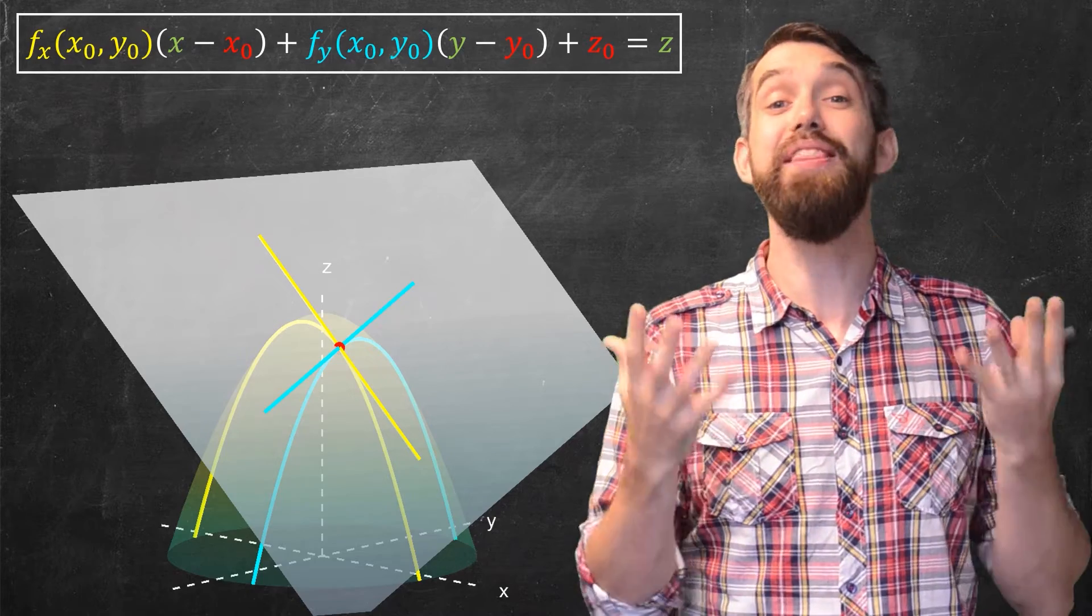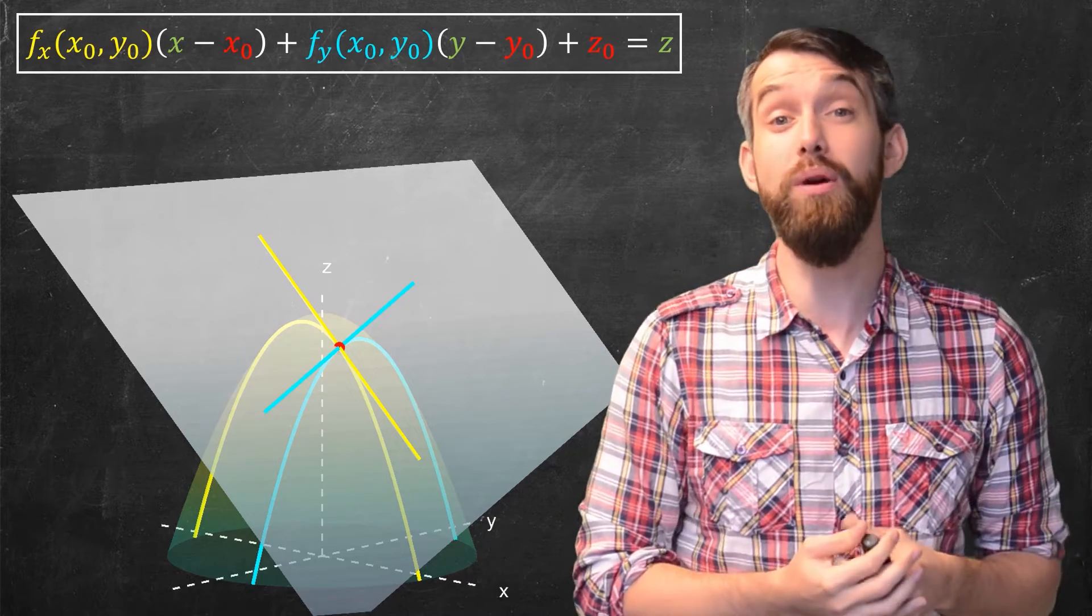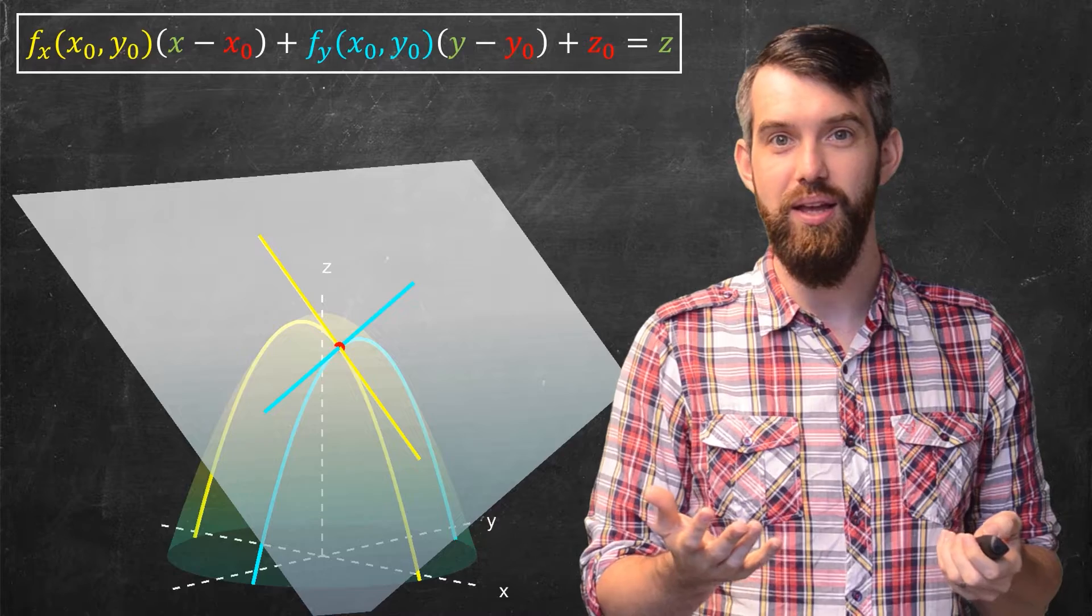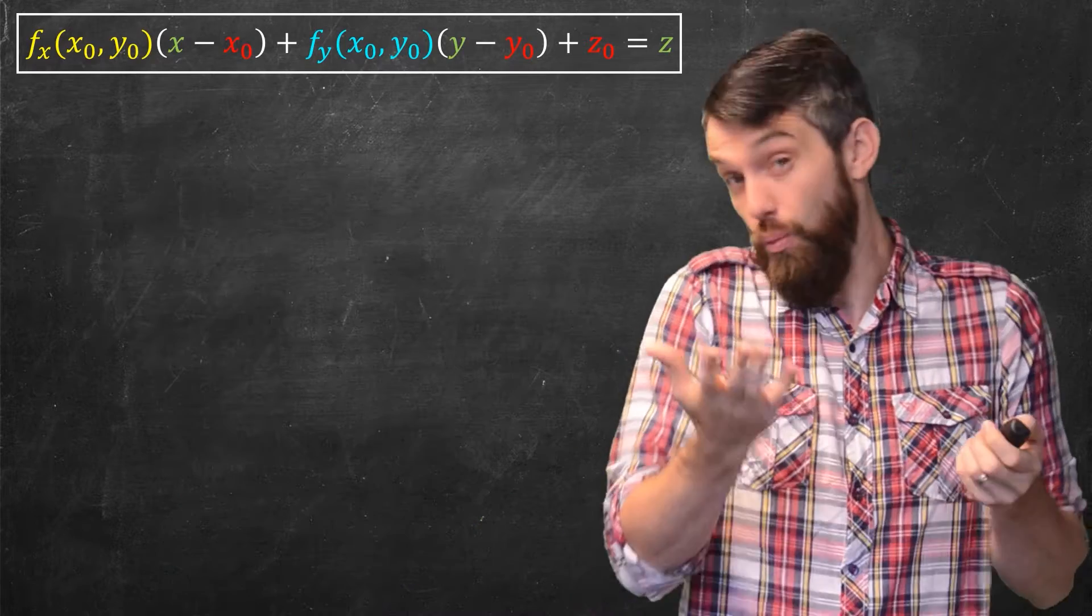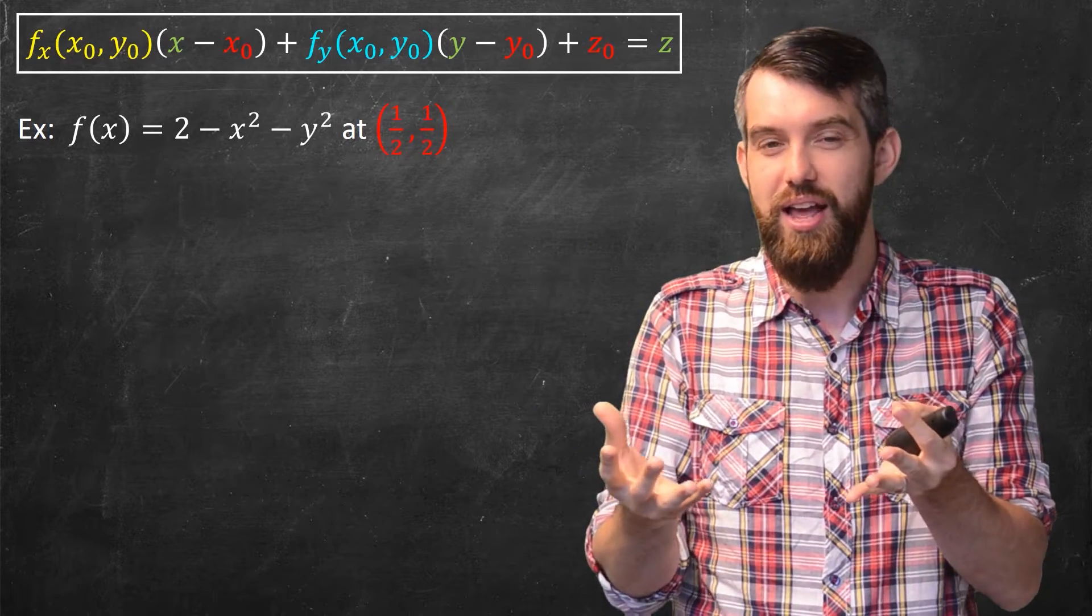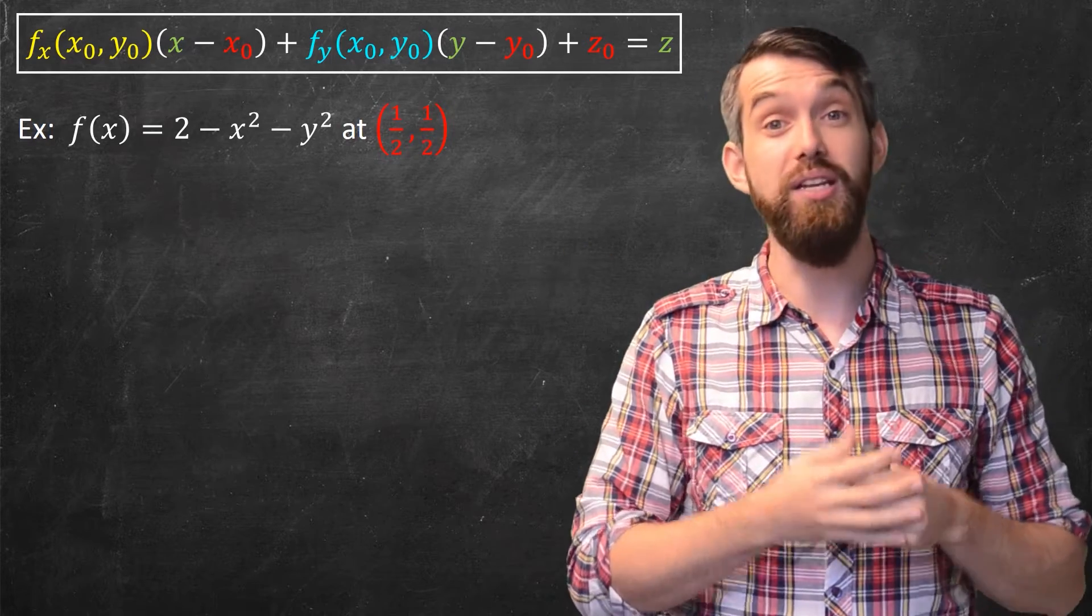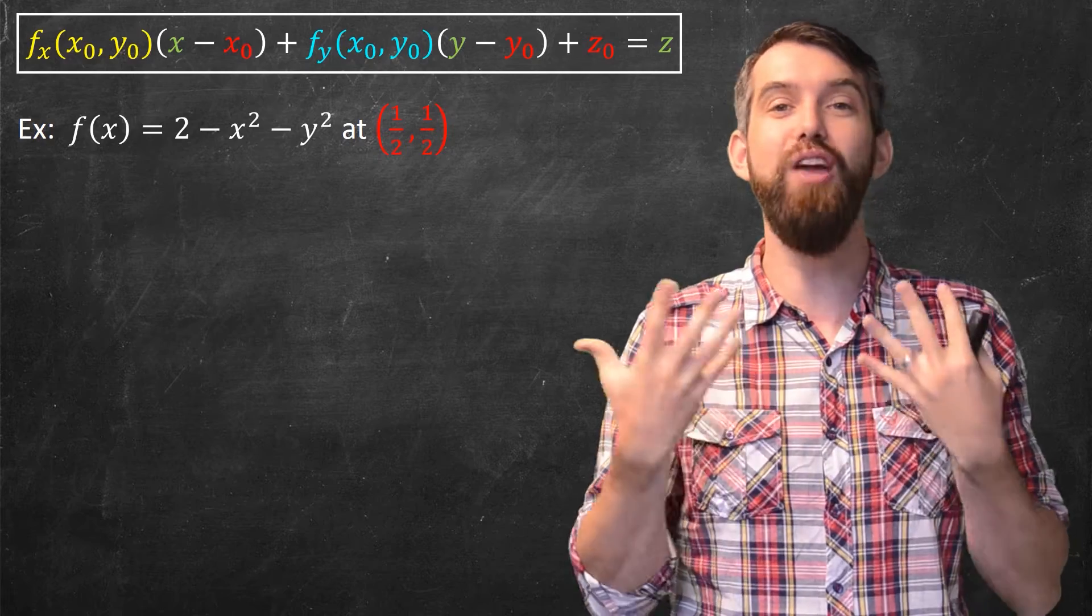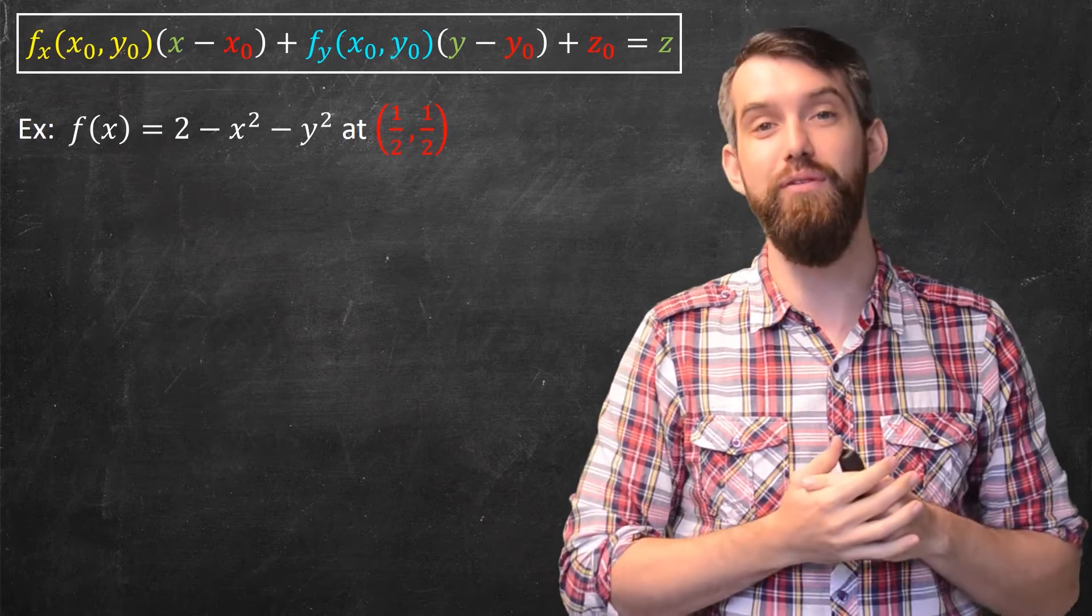Nevertheless, we get this formula. So let's see how it works out in a specific example. In the example I'm going to use is the one that I've been programming here is the function is 2 minus x squared minus y squared. And I've specified a particular point, the point x0 is 1 half and y0 is 1 half. That's what we're going to investigate.